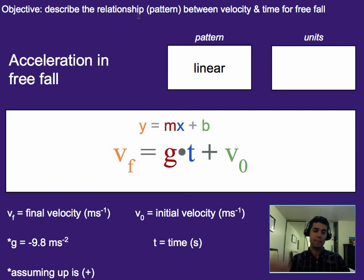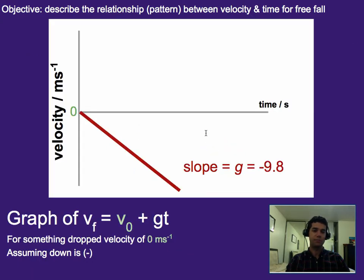The reason why is because now I can map this to which pattern it follows. In this case, it happens to be linear, where y is your final velocity, your slope is gravity, your x value is the time, and your y-intercept is the initial velocity. And so we can see how this plays out in graphs now.